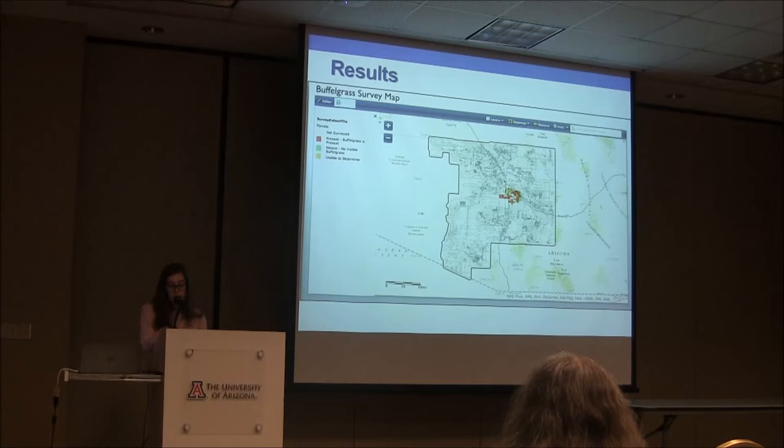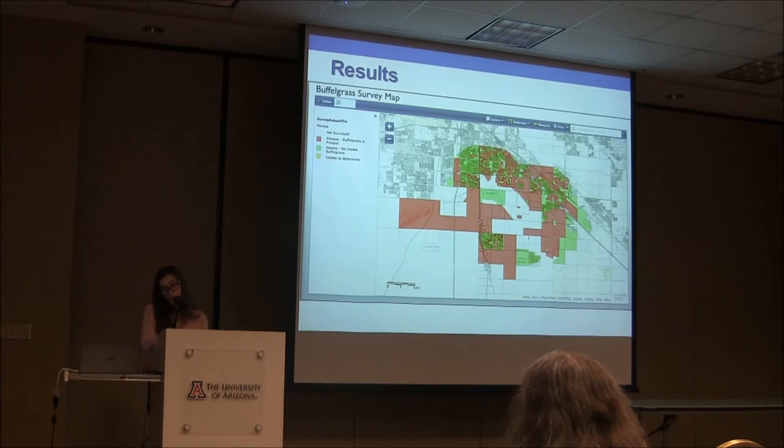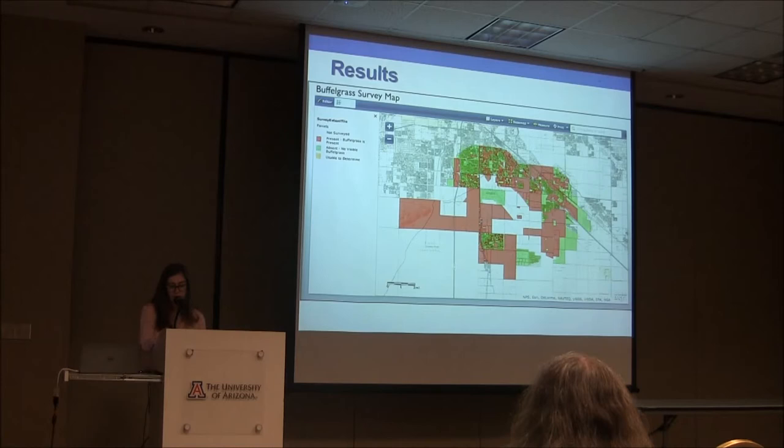The majority of the parcels surveyed are located in the center of the survey area, as shown by the red and green polygons. When you zoom in, you can see these parcels are surrounding the Tucson International Airport — this is because the SABCC grant project was located in this area.